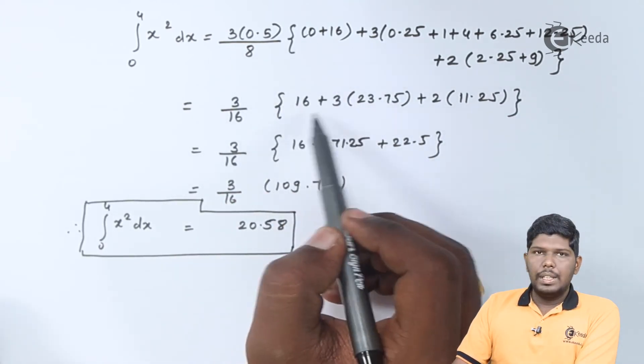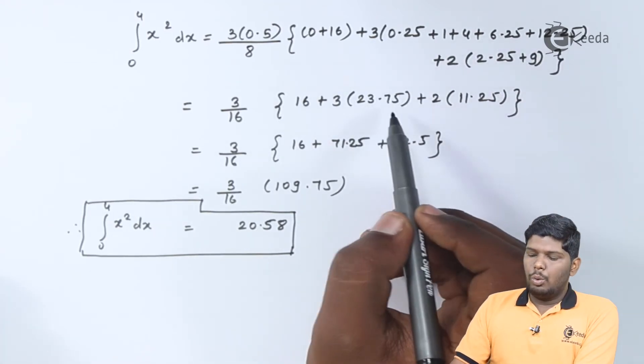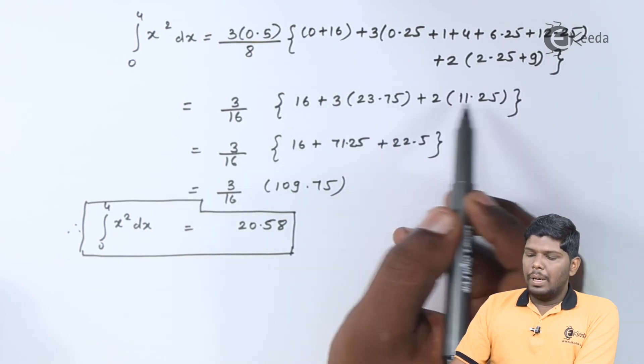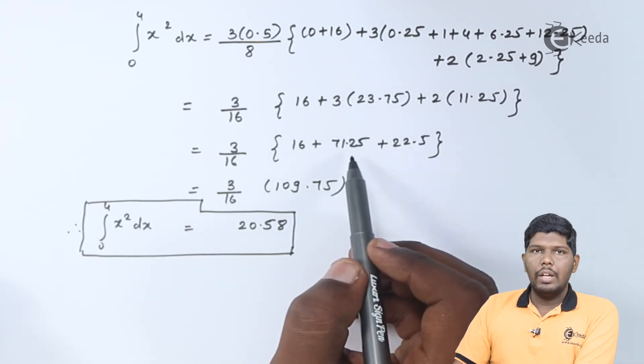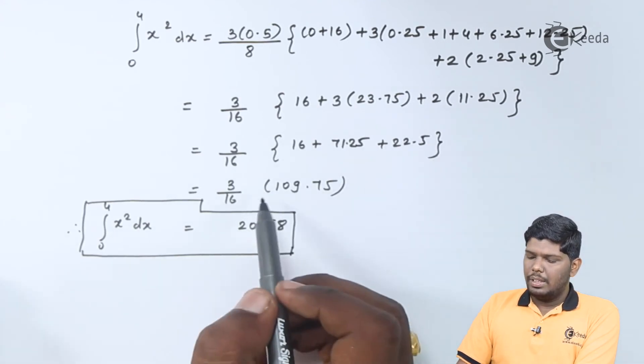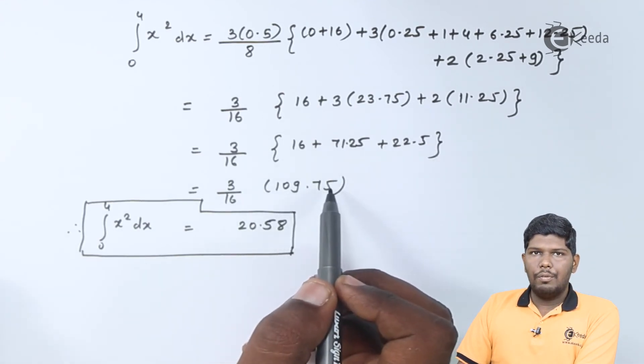Let us substitute these values. Here, we have 16 plus the addition of these terms will give you 23.75. Again, we have 11.25. After multiplication with 3 and 2, we have 71.25 and 22.5. And after adding these 3 terms, we have 109.75.